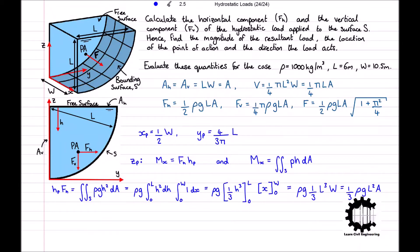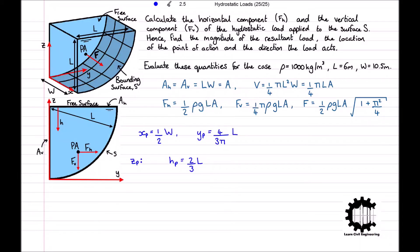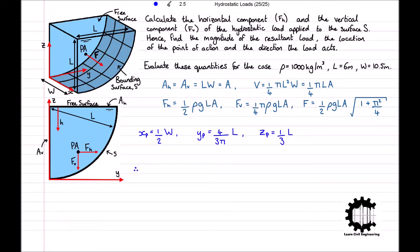Factoring and rearranging for HP, we find that rho G, L, and A cancel from the expression, leaving HP equals one third L divided by one half, so HP equals two thirds L. Since H relates to Z by H equals L minus Z, we get ZP equals L minus HP equals L minus two thirds L, so ZP equals one third L. Therefore the location of the point of action is XP, YP, ZP equals one half W, four over 3 pi times L, one third L.